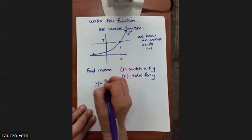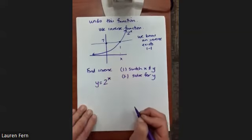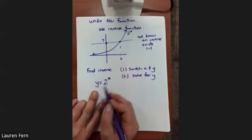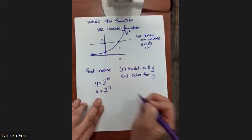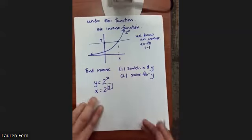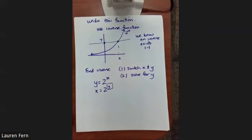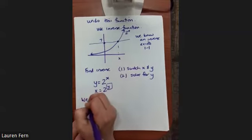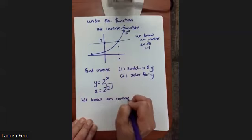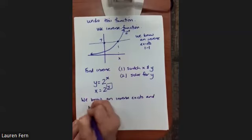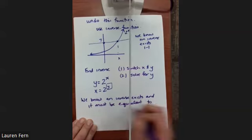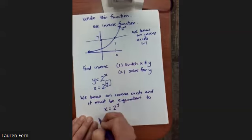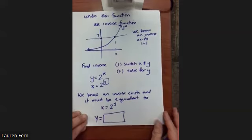We've got the function y = 2^x. We can switch x and y to get x = 2^y — that's the doable part. But now we need to solve for y, and we're still stuck. We have no way to solve for y as it stands. We know an inverse exists and it must be equivalent to x = 2^y, but we want to write it as y equals some value.